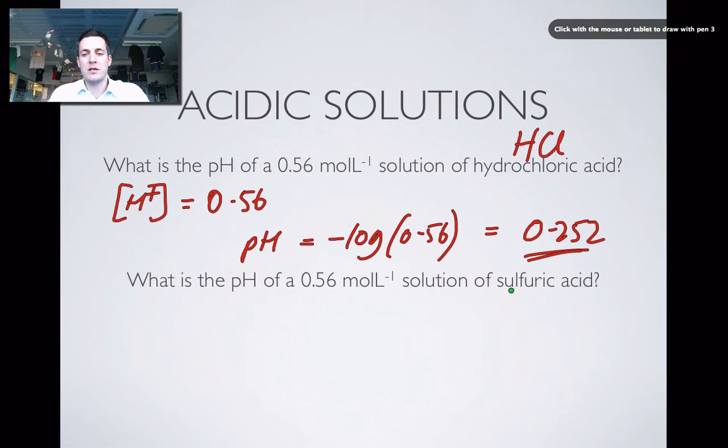Now this next one's a little bit more complicated because you need to watch out for the fact that sulfuric acid is diprotic. It's also strong, but in year 11 you could assume that both ions would be lost. In year 12 you can't do that. You've got to remember that the first one is strong, the second one is weak. And that was mentioned in one of the films in year 11.